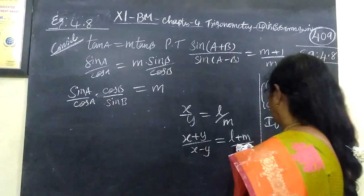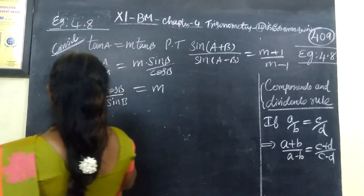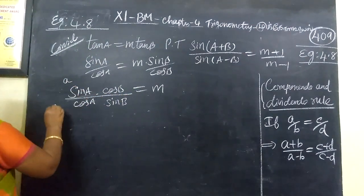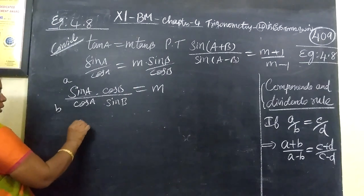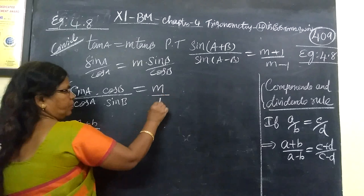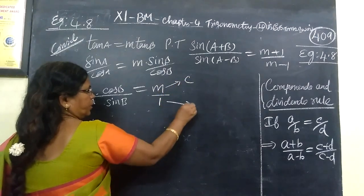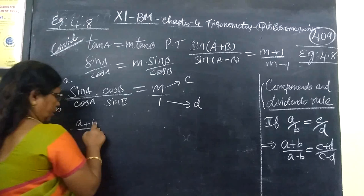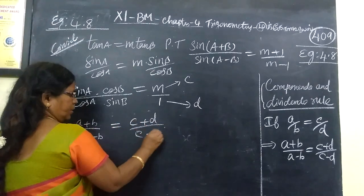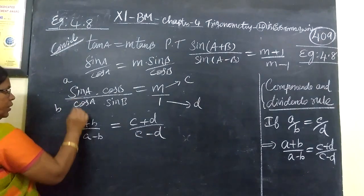We apply the componendo and dividendo rule. Here, a plus b by a minus b. Here is a by 1, this is c and this is d. A plus b by a minus b equals c plus d by c minus d.